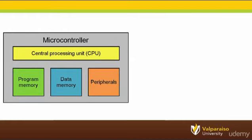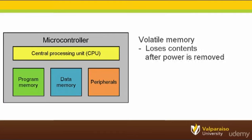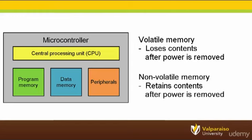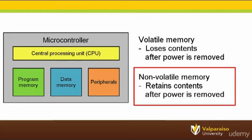There are two important terms used to describe program memory in embedded systems. The first is volatile memory — a memory is volatile if it loses its contents after power is removed. Next is non-volatile memory, which is the opposite: non-volatile memories retain their contents after power is removed. Most embedded systems store their programs in non-volatile memory, as the embedded system must be able to retain its program after it loses power.